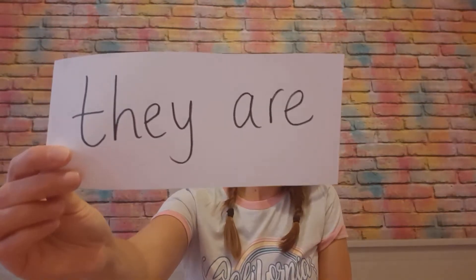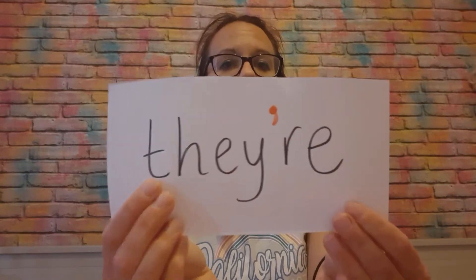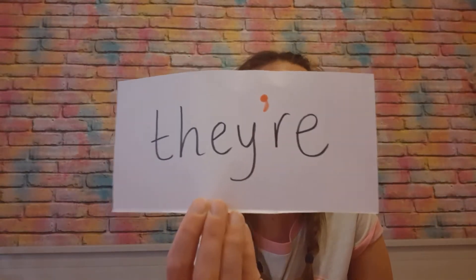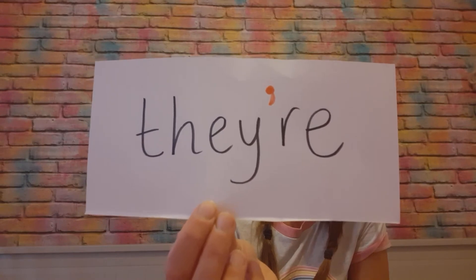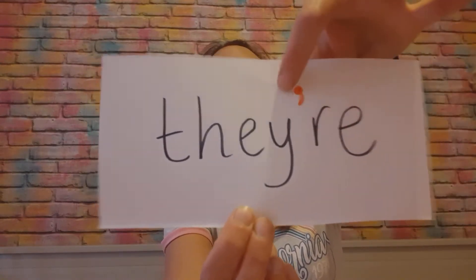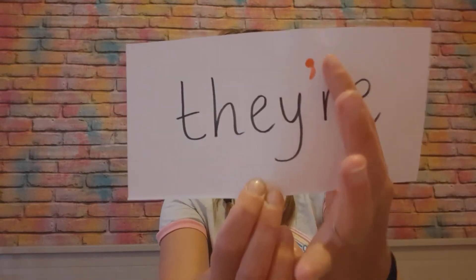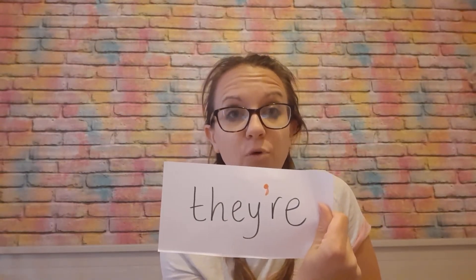Exactly the same as 'we're', we have 'they are', and that 'a' goes — instead of the 'a' we have the apostrophe, so we get 'they're'. There are three different 'there's' that you need to learn — it's quite complicated. But what you need to remember is if we're talking about what some people are doing, we use 'they're': for example, 'they're running' or 'they're enjoying their lessons'. If you think it could be 'they are', then 'they're' with the apostrophe is the one you need.